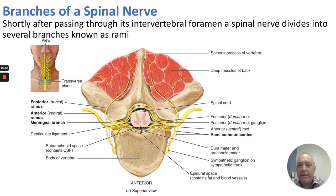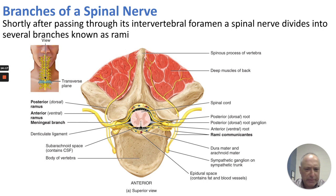Branches of the spinal nerve: shortly after passing through its intervertebral foramen, the spinal nerve divides into several branches known as rami. Looking at a superior anterior view of what appears to be thoracic vertebrae, we can see rami communicantes coming out of the roots. There is a posterior ramus, an anterior ramus, and a meningeal branch.